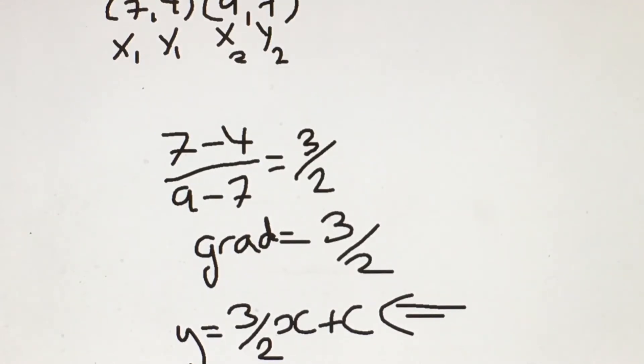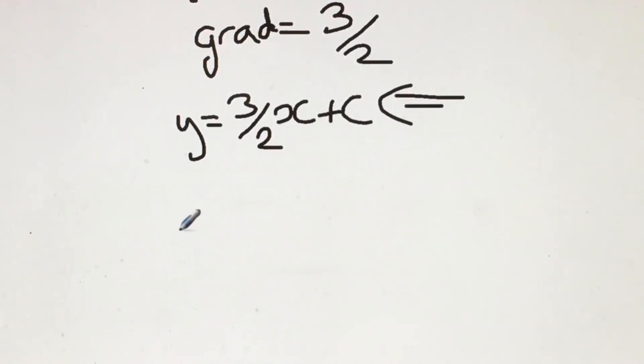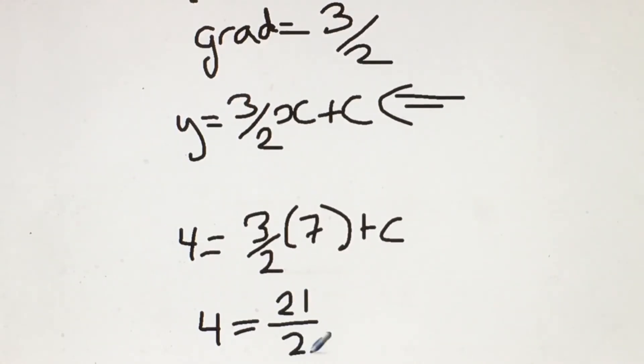In this case I'm going to use point P, so y is 4 and x is 7. So 4 equals 3 over 2 open brackets 7 close brackets plus c. So 4 equals 21 over 2 plus c.